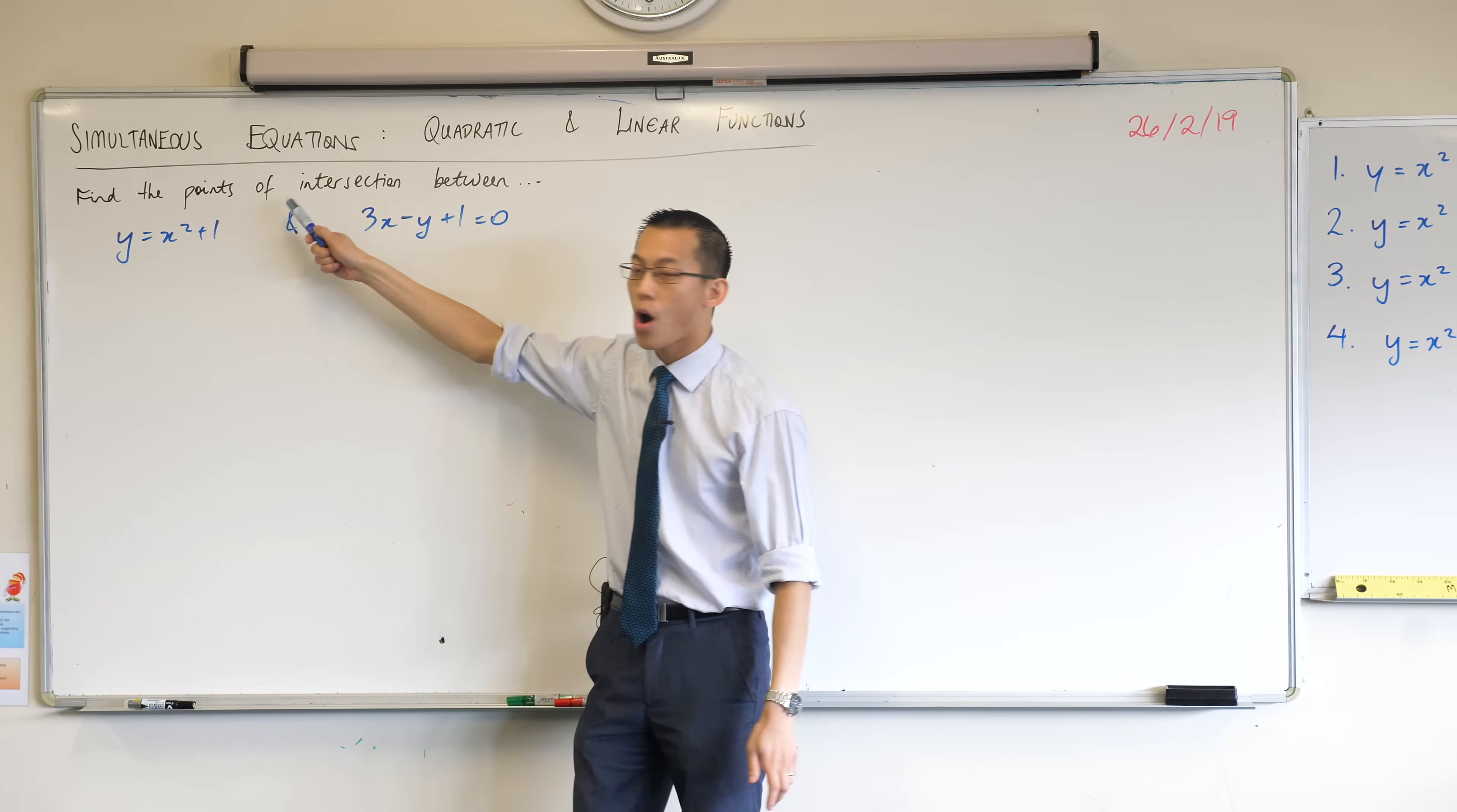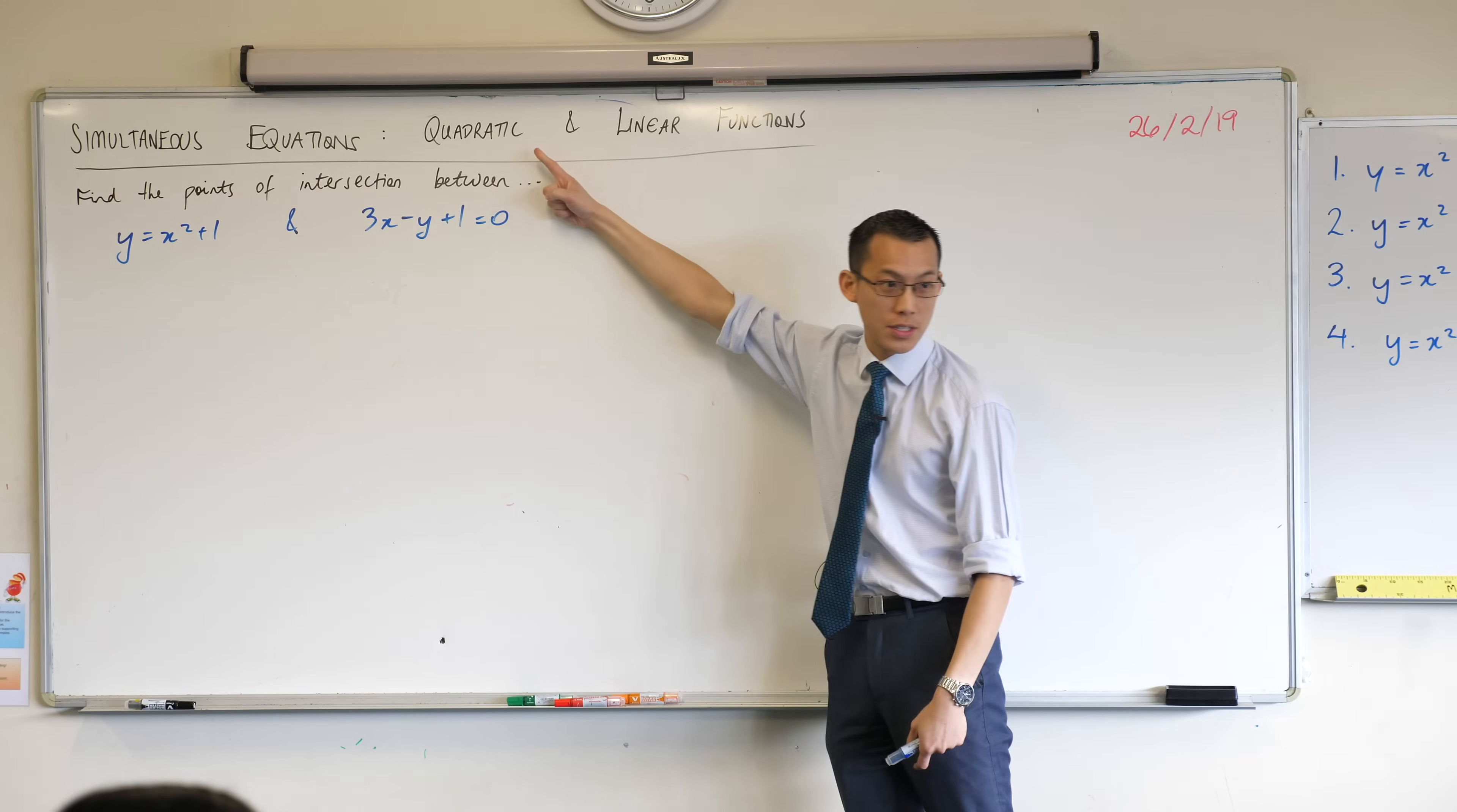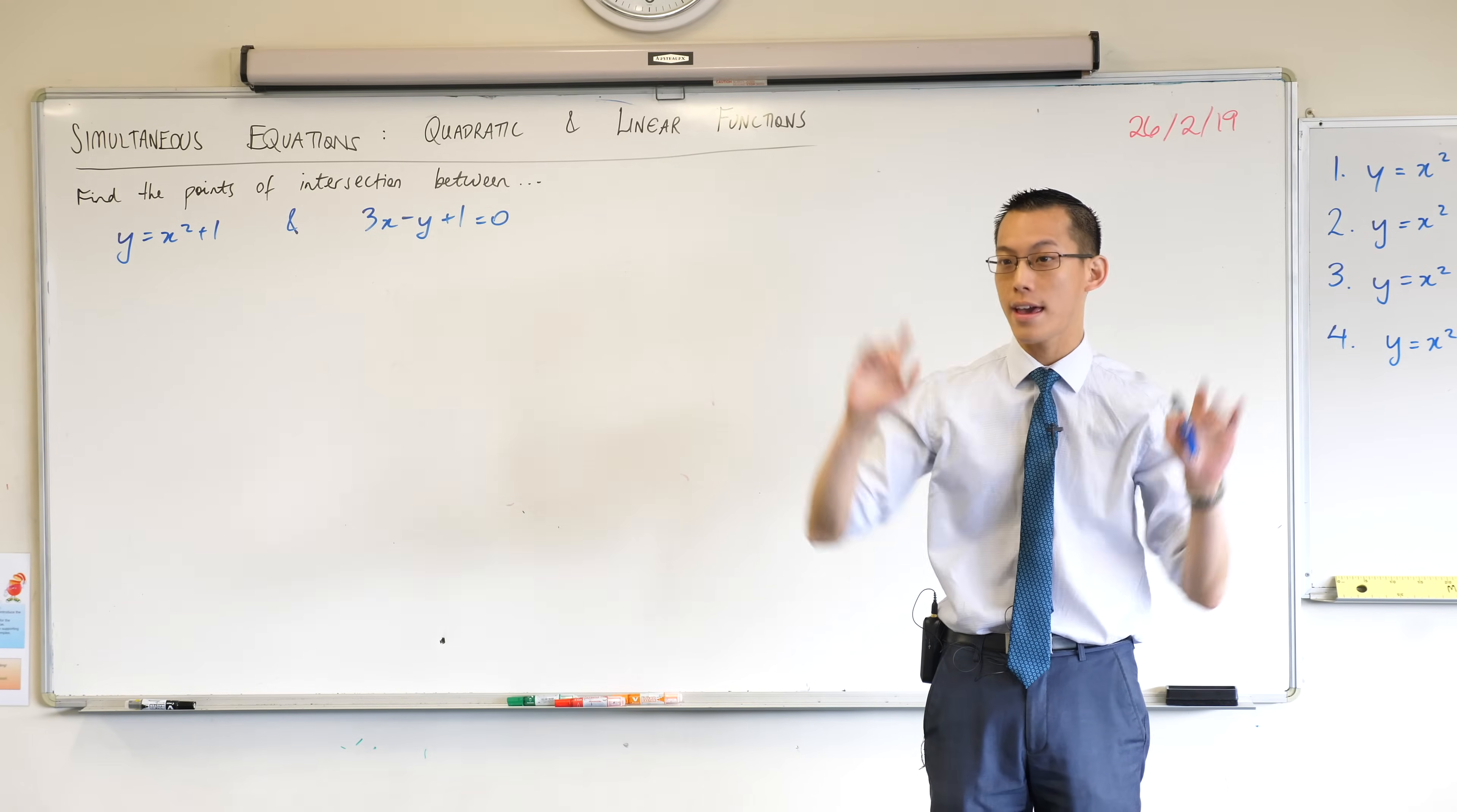Find the points of intersection. These are lines, one of them is going to give us a parabola, one of them is going to give us a straight line, and they are going to intersect at some spots, and we want to find out where they are.